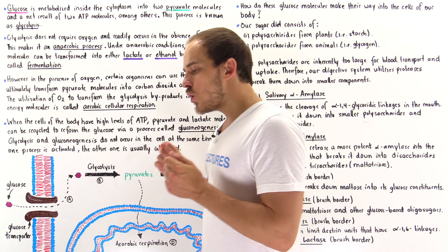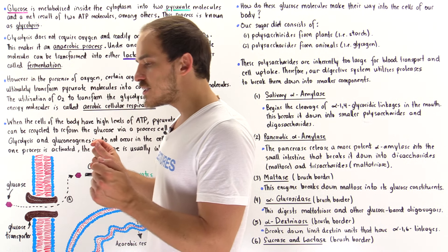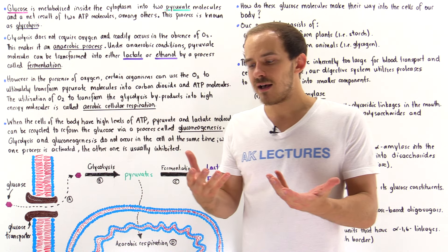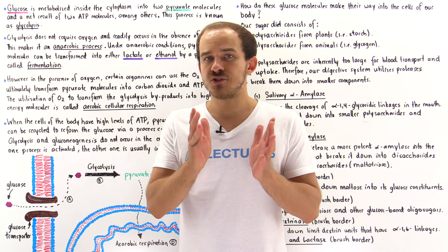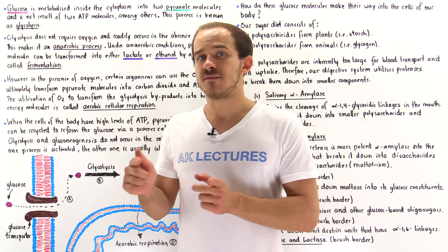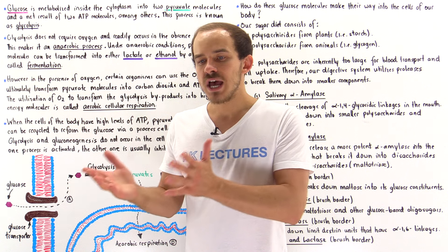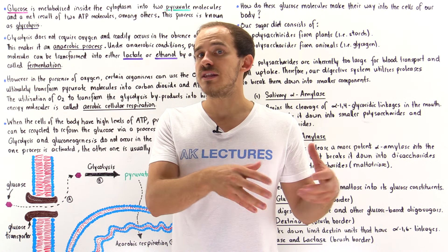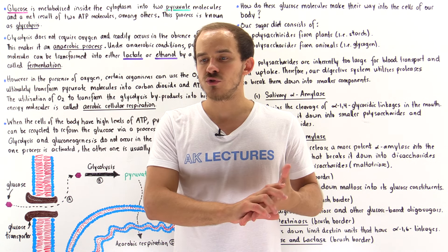Glucose metabolism is the process by which our body, our cells, basically try to transform the energy that is stored in the chemical bonds of the sugar molecule, the glucose, into the energy that is stored in the bonds of ATP molecules.